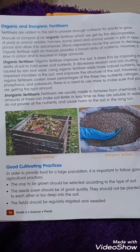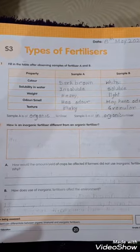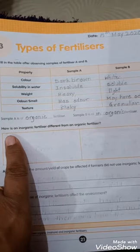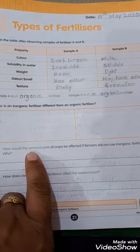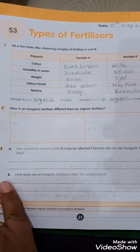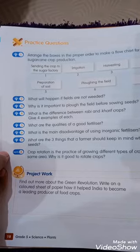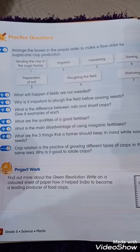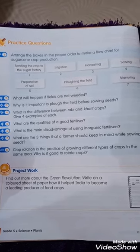Students, please read page 16 — the heading 'Organic and Inorganic Fertilizers' in the content book. Then complete S3 page 21 in the workbook: Question 1 is the activity table; Question 2 is how inorganic fertilizer differs from organic; Question 3 is how yield would be affected without inorganic fertilizer; and Question 3b is how inorganic fertilizer affects the environment. Homework: complete Questions 5 and 6 on page 18 in the notebook.